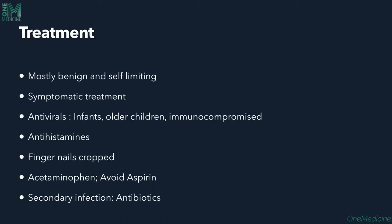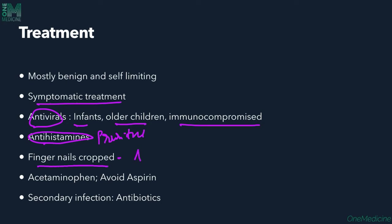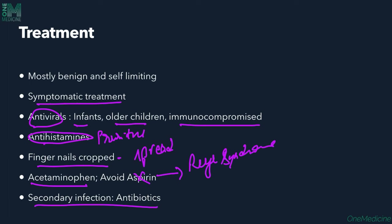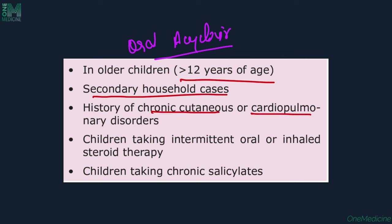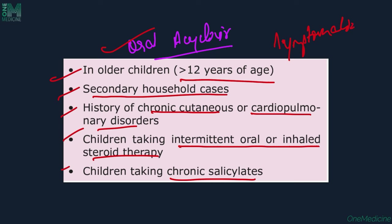Treatment: Varicella is a benign disease and usually does not require specific treatment; symptomatic treatment is sufficient. Antivirals can be given for infants, older children, and immunocompromised patients. Antihistaminics can be given for pruritus. Fingernails need to be kept short to avoid spread. Acetaminophen is preferred; aspirin should not be given due to risk of Reye's syndrome. Antibiotics if secondary bacterial infection occurs. Oral acyclovir is indicated for children older than 12 years, secondary household contacts, those with chronic cutaneous or cardiopulmonary disorders, children on intermittent oral or inhaled steroid therapy, and children on chronic salicylates.